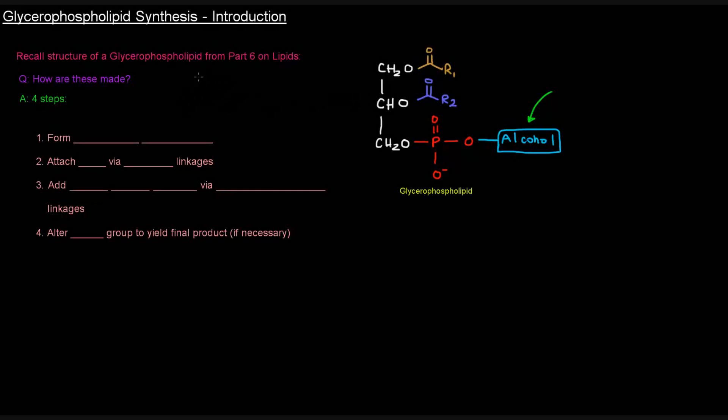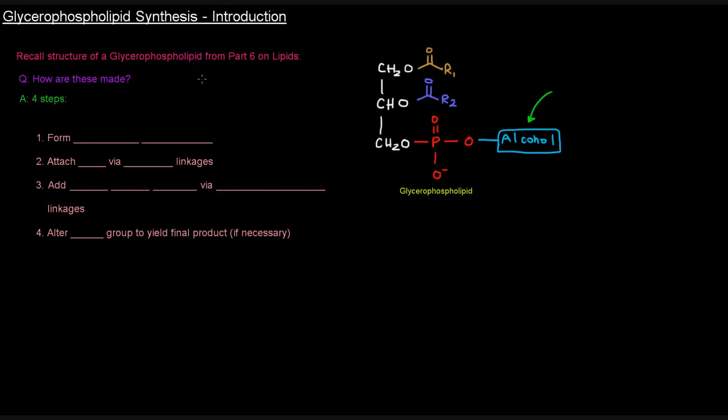Previously, we discussed the structure of a glycerophospholipid, and now I want to talk about how we make them. So here's a glycerophospholipid with its glycerol backbone, its two acyl groups, and its polar head group that includes a phosphate group. This whole thing is often called the phosphoalcohol. This whole portion is the polar head group that we talk about when we talk about glycerophospholipids. So the question is, how are these things made?